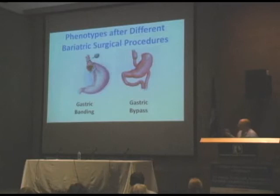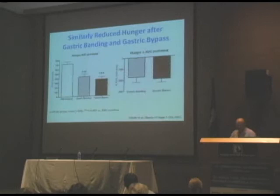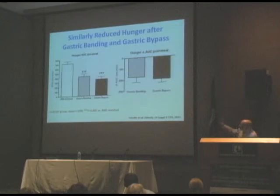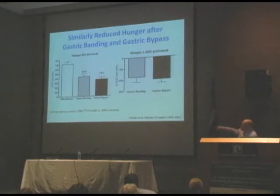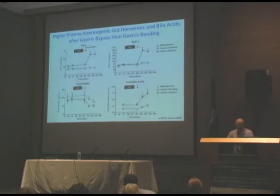To give an example of how these procedures differ, we've been comparing the effects of gastric banding and gastric bypass on eating behavior and food reward. We studied, cross-sectionally, BMI-matched patients after gastric banding or gastric bypass, studied several months post-op at a weight-stable state, and compared them to BMI-matched controls. Both the banding and bypass groups were equally unhungry in the fasted state. When they ate ice cream to satiation, they showed a similar reduction in hunger — so in terms of hunger and satiety, the two groups are well matched.